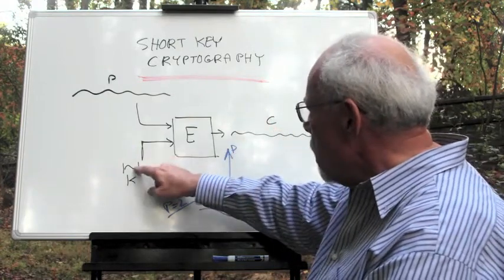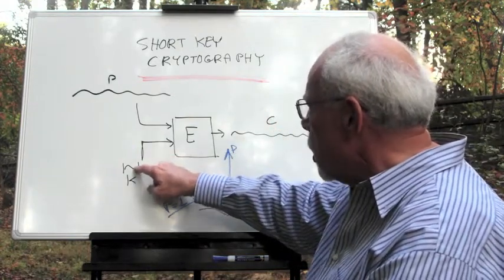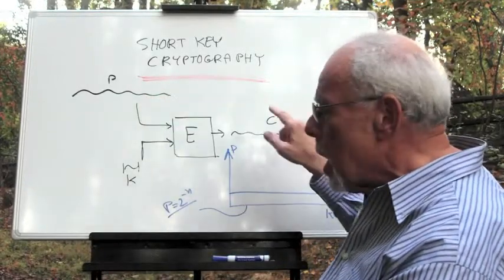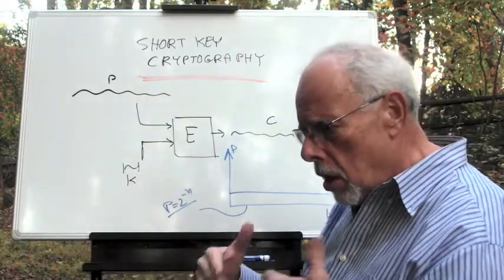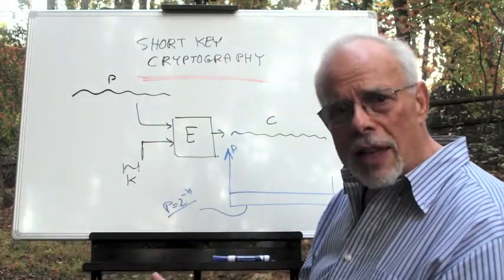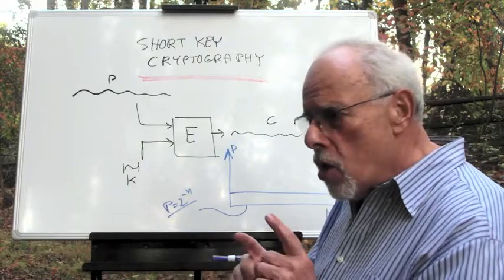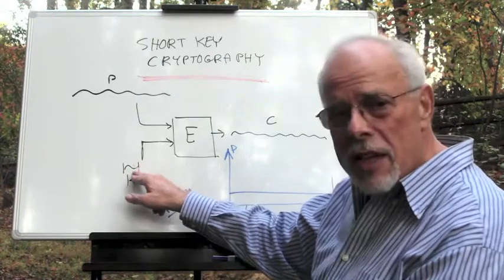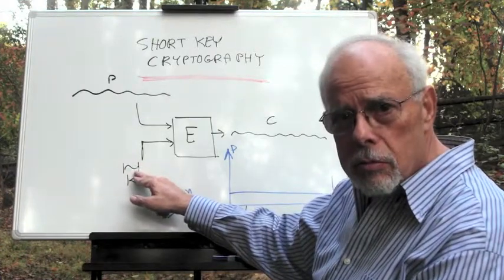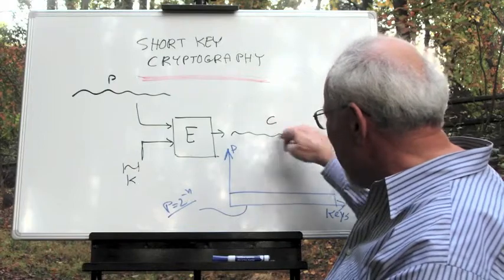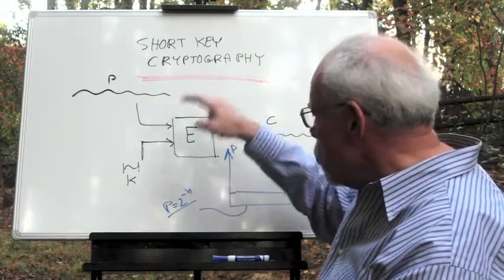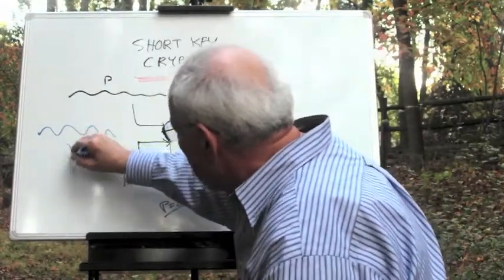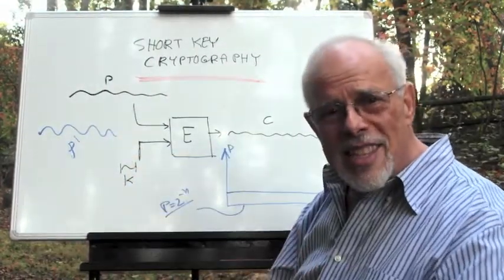If you use a key, a certain key, a short key, to encrypt this plain text to a ciphertext, and the plain text, let's say, is a normal English text, the chance that there will be found another key that will decrypt the same ciphertext to another plain text is negligible.